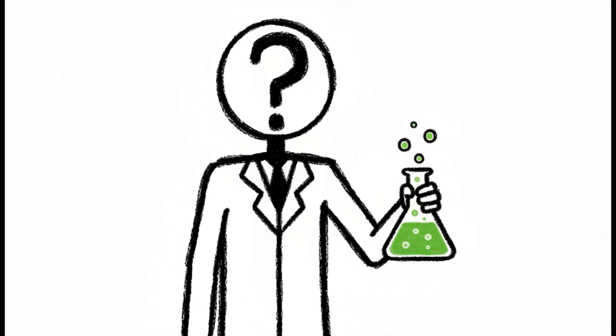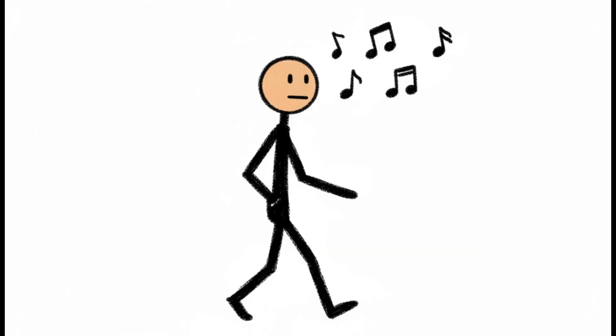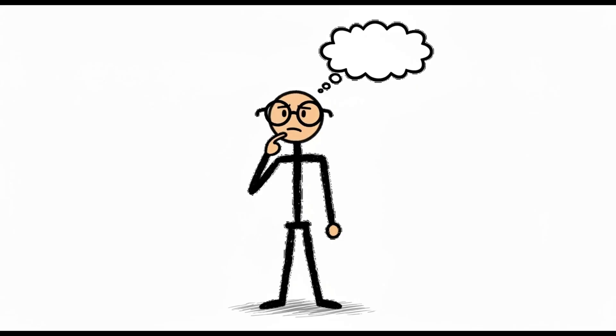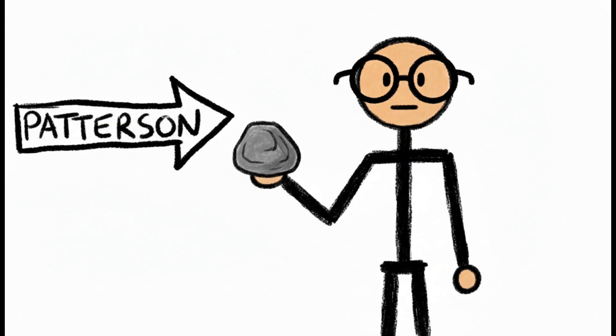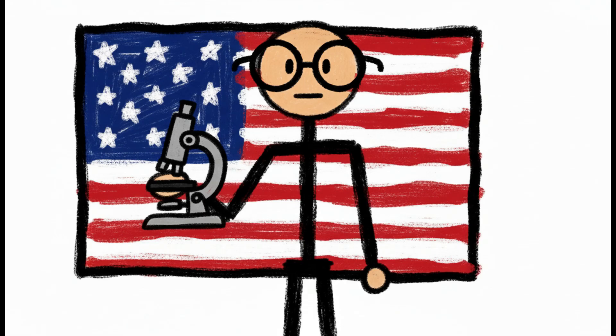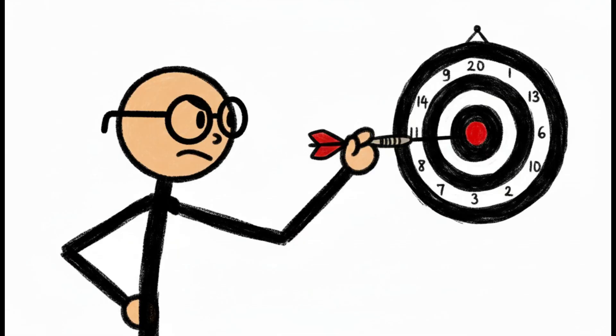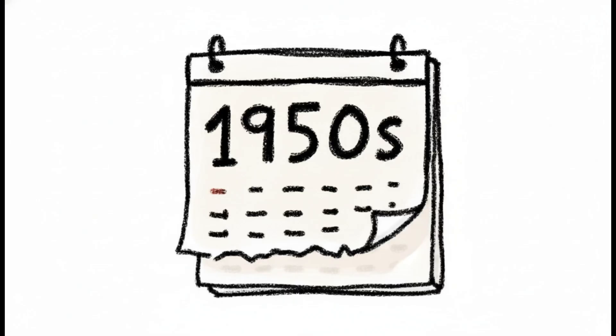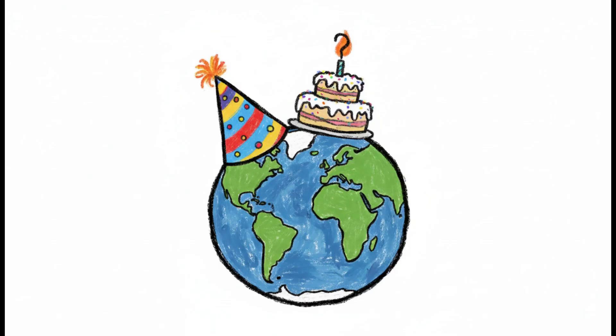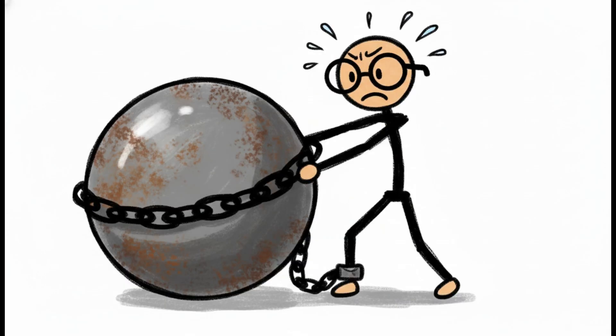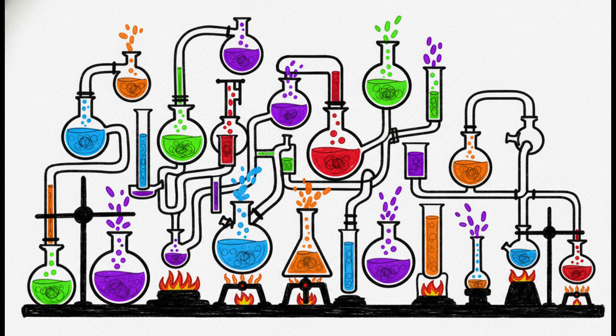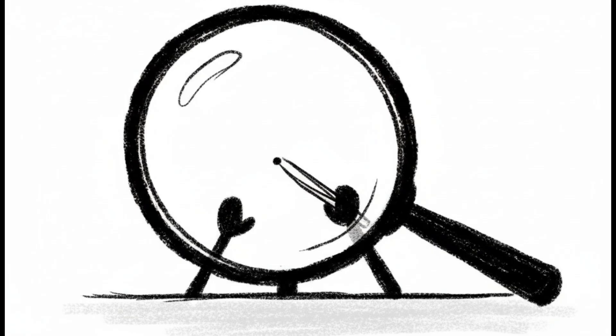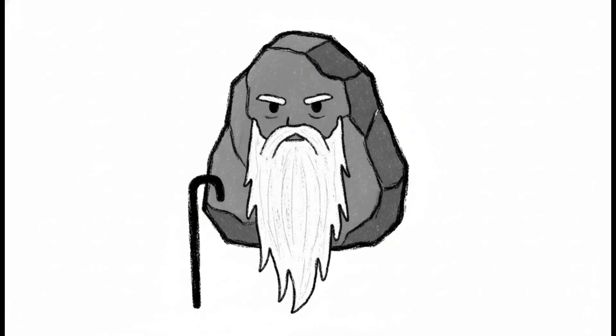The next story involves a scientist who didn't even set out to save the world. He just wanted to weigh it. Meet Claire Patterson, an American geochemist. His primary goal in the mid-20th century was to accurately date the age of the Earth, a massive undertaking that required developing complex new laboratory techniques to measure tiny amounts of lead in ancient rocks.